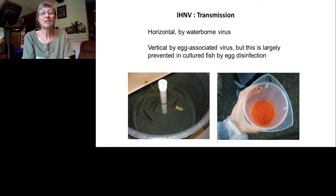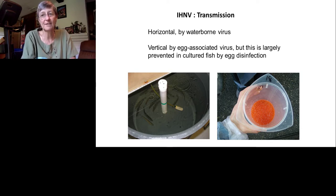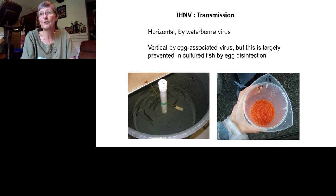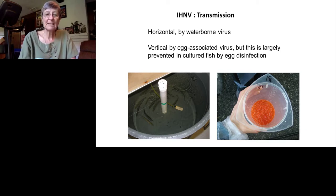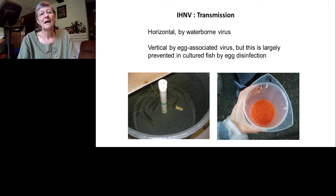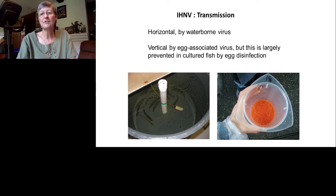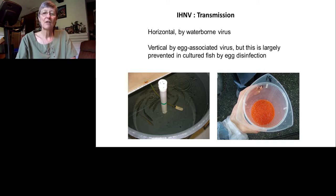The majority of IHNV transmission is horizontal — waterborne virus shed from infected fish is taken in by naive fish through the gills or skin at the base of the fins. Egg-associated transmission is also possible but can be prevented in cultured fish by disinfecting eggs with iodophore. In cultured fish the majority of transmission is horizontal; in the wild, both horizontal and vertical transmission occur.